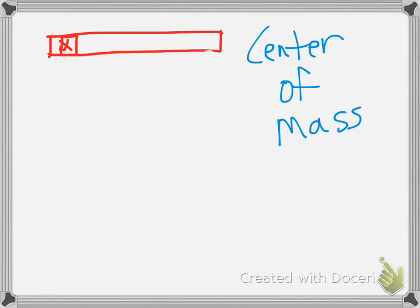For a uniform object, and we're talking about an object that is similar on all sides, so say like a meter stick or even a pen or a pencil can be to some extent, that center of mass is right in the middle. So here's our center of mass.